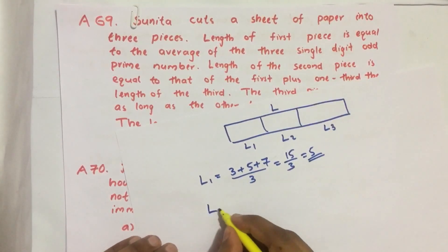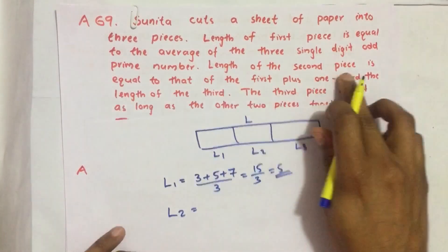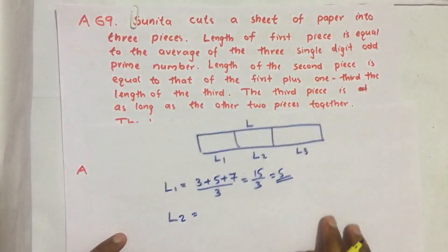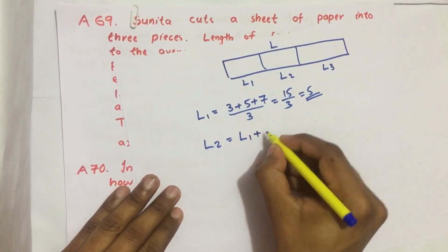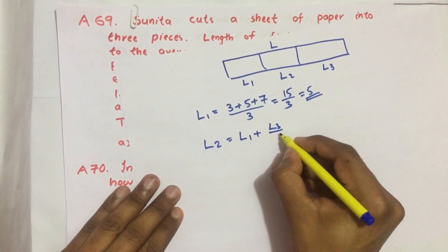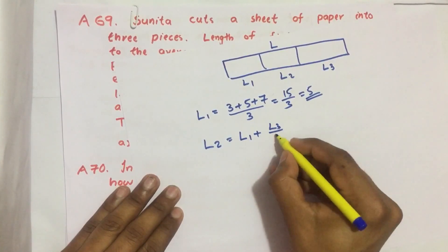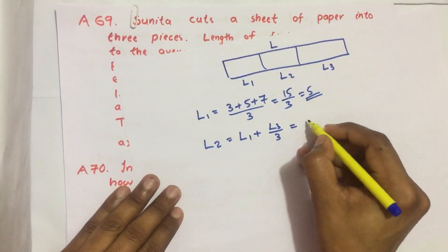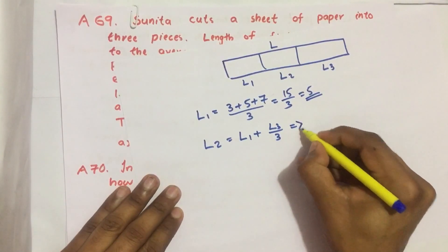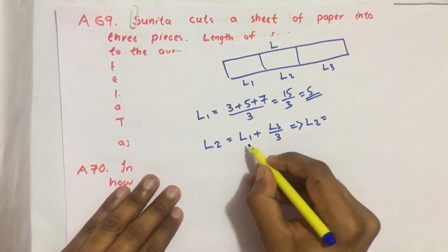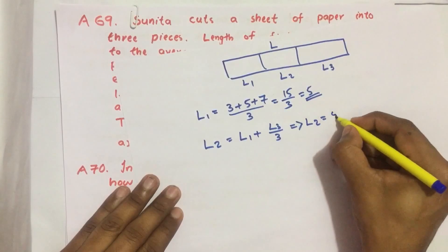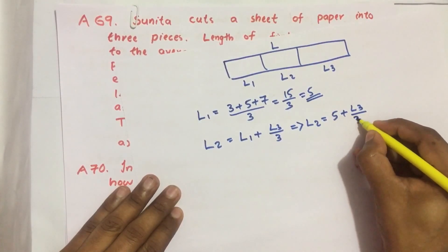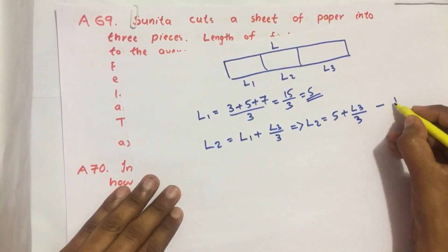Next, L2: the length of the second piece is equal to that of the first plus one third of the length of the third, so L2 = L1 + L3/3. Since L1 equals 5, we write L2 = 5 + L3/3. This is equation number 1.